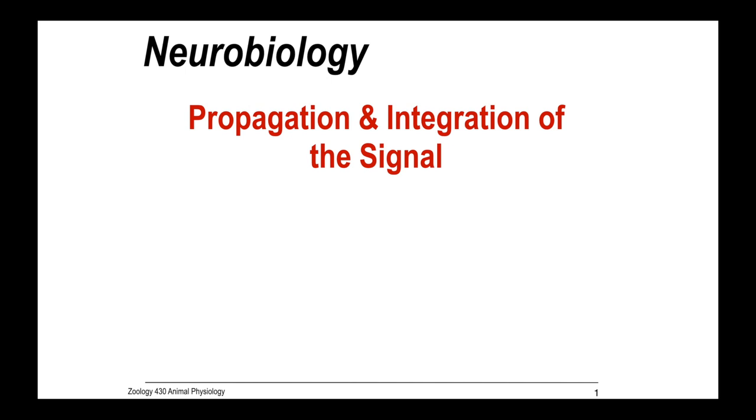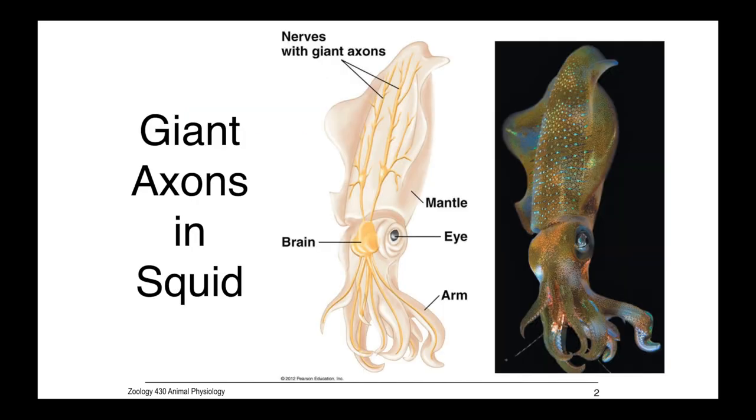Propagation and Integration of the Signal. Alan Hodgkin and A.F. Huxley, along with John Eccles, won the Nobel Prize in Physiology or Medicine in 1963 for their discoveries concerning the ionic mechanisms involved in excitation and inhibition of the peripheral and central portions of the nerve cell membrane.